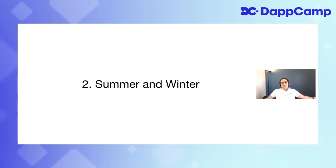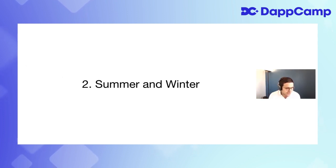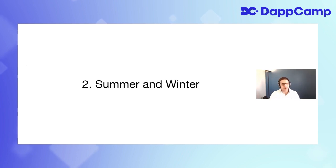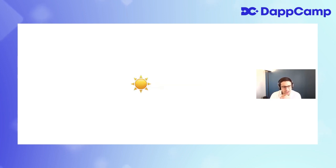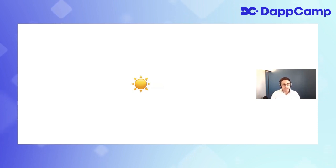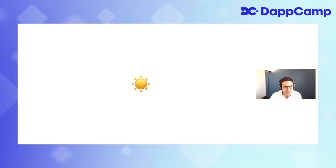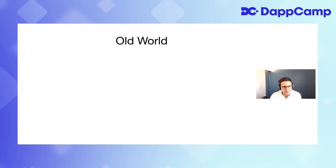Number two: crypto summer and winter. People at Coinbase would talk about this a lot — when is crypto summer starting, when are we getting out of crypto winter? I think it's a somewhat problematic metaphor. It's a learned helplessness thing. In crypto, builders decide what the weather is going to be. We don't have to wait to see where the market goes. We make things happen. We can choose to release something cool, choose to share something with the world — it's really our decision what the weather is.